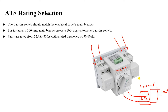ATS ratings are available from 32 amperes to 800 amperes, with a rated frequency of 50 to 60 Hz. There are also some types of ATS that can reach up to 4000 amperes for diesel generators. In this lesson we talked about the automatic transfer switch and how to select it.